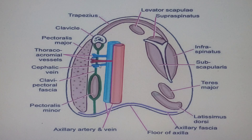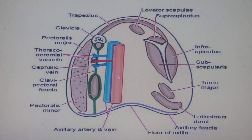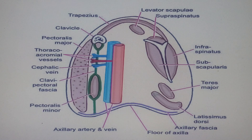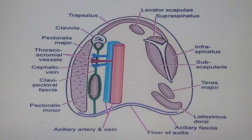Looking at the second part of the axillary artery, there is one branch coming out called the thoraco-acromial trunk. This thoraco-acromial trunk has to pierce the clavipectoral fascia and come out to supply muscles in the area, such as the pectoralis major muscle. So the artery piercing the clavipectoral fascia is the thoraco-acromial artery, also called the acromial thoracic artery.